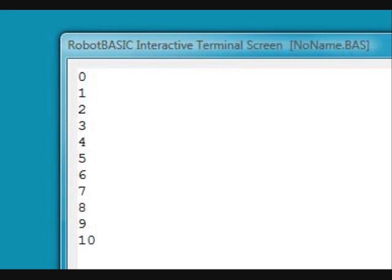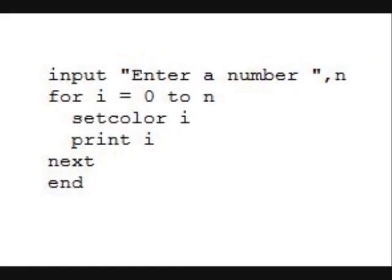This lets the student see very quickly what a for loop does. Let's look at the program again, but let's add one more line. Right after the for loop, let's put in the command setColor I. So we're setting the color to 0 the first time through the loop, to 1 the next time, to 2 the next time, and so on. The student gets to see very quickly what's going on and how all this works. Let's run this program now.